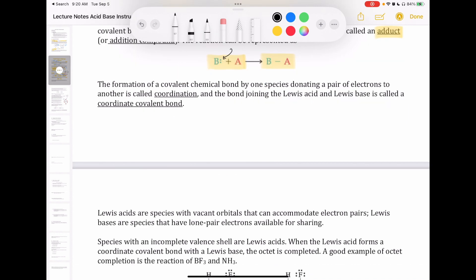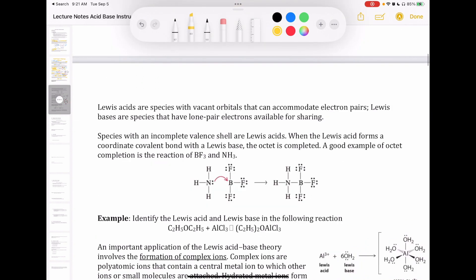So this new compound we call a coordination compound. The bond itself is often called a coordinate covalent bond because it is a covalent bond between the base and the acid because the electrons are being shared.